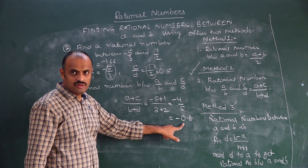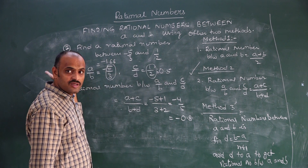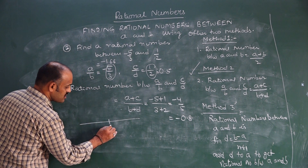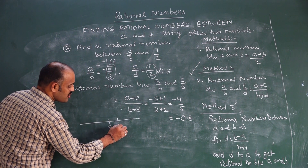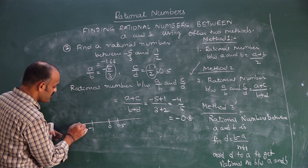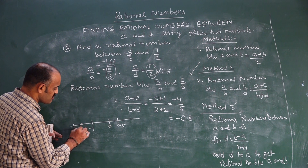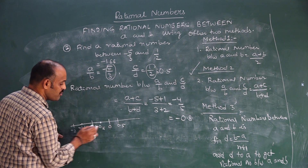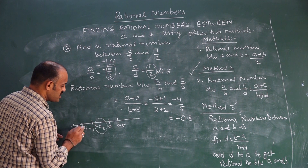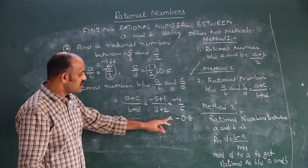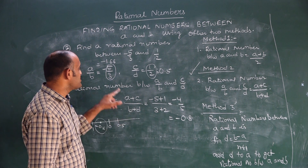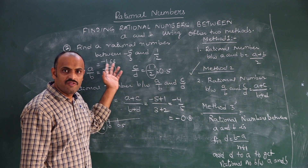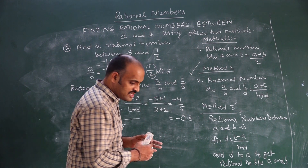Because it is very close to 0, this is greater than minus 1. If you check on the number line, 0 is here and 0.5 is here. Minus 1 is here, and somewhere will be minus 2. Minus 1.66 lies here, and minus 0.8 lies between 0 and minus 1. So it lies between these two. Therefore, minus 0.8 lies between minus 1.66 and 0.5. You can verify using this method.